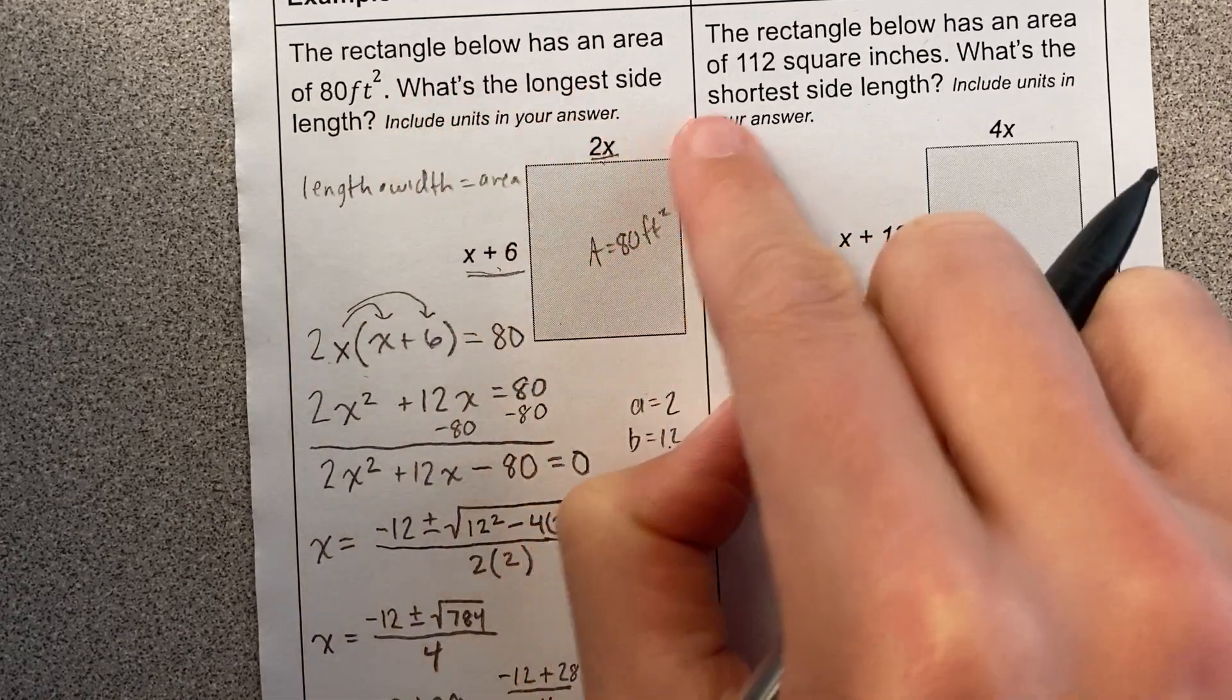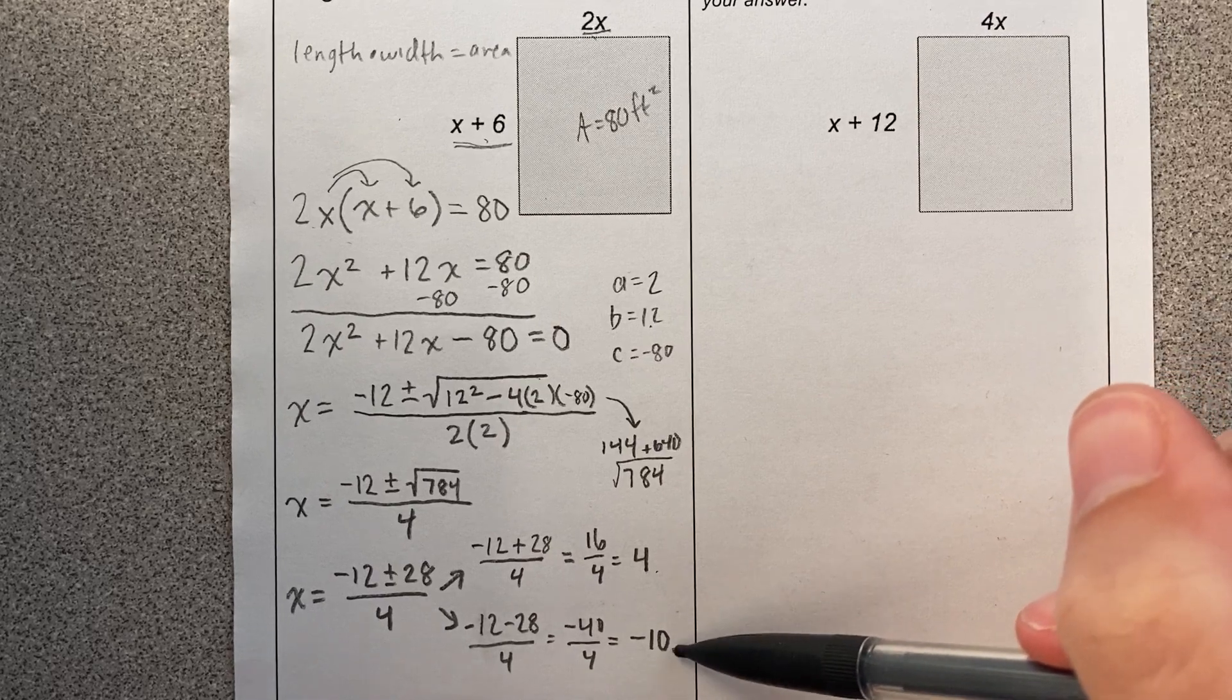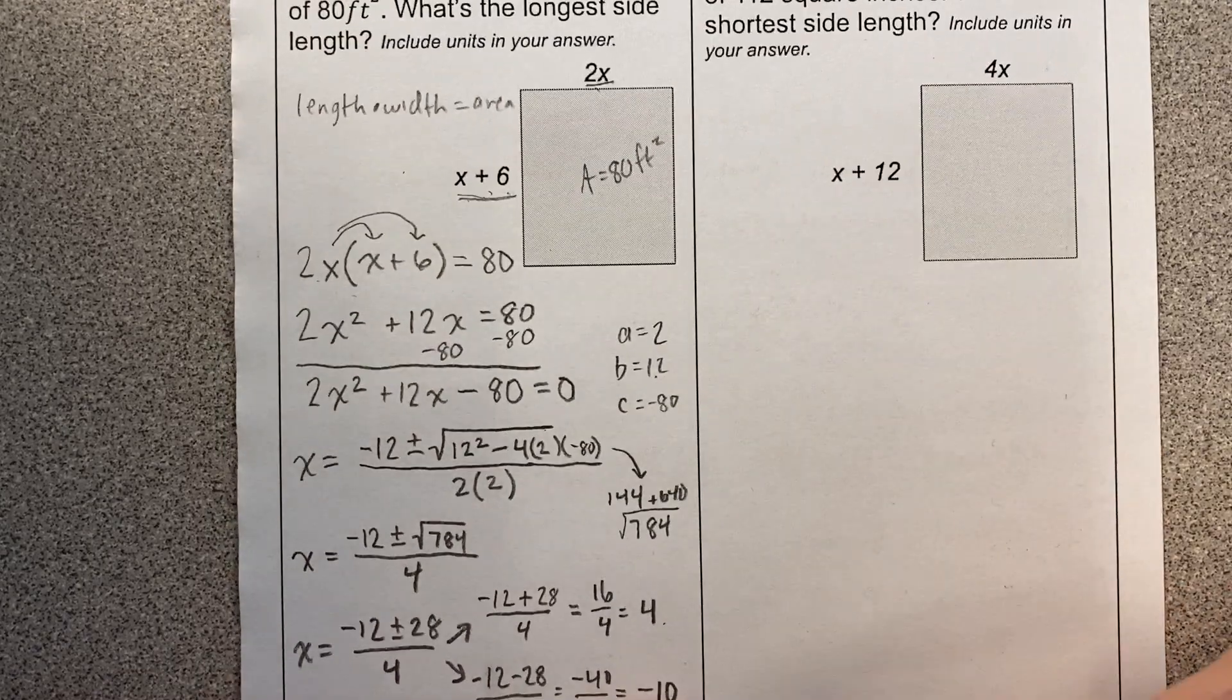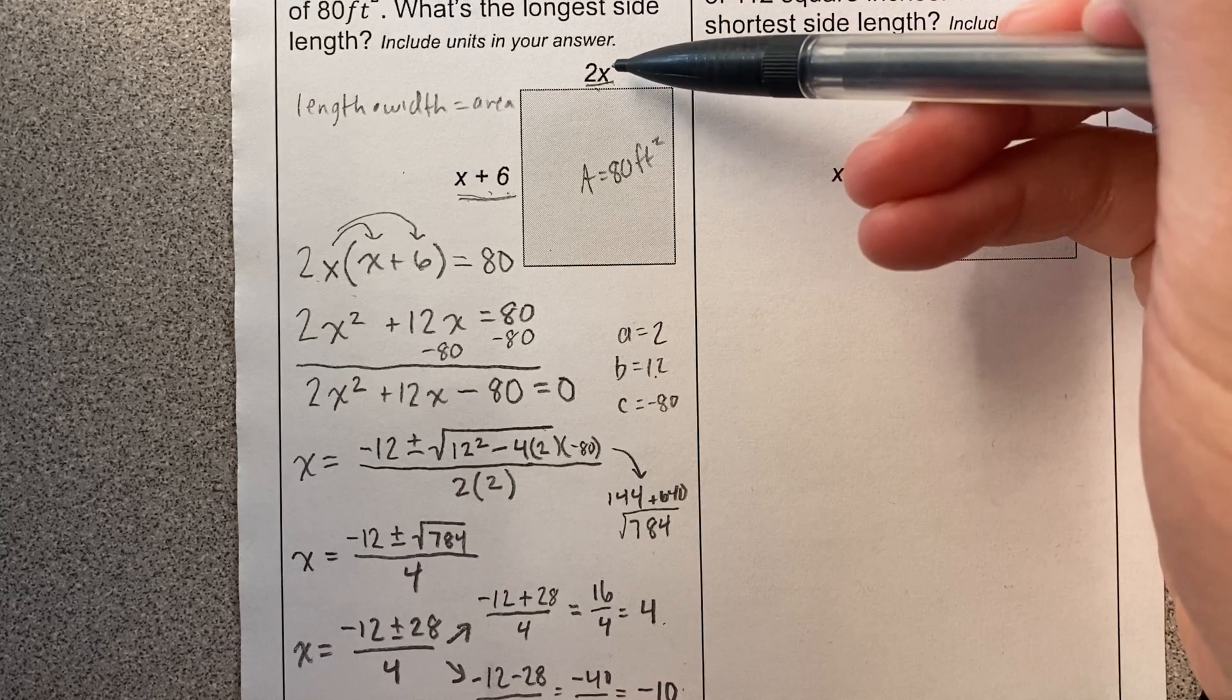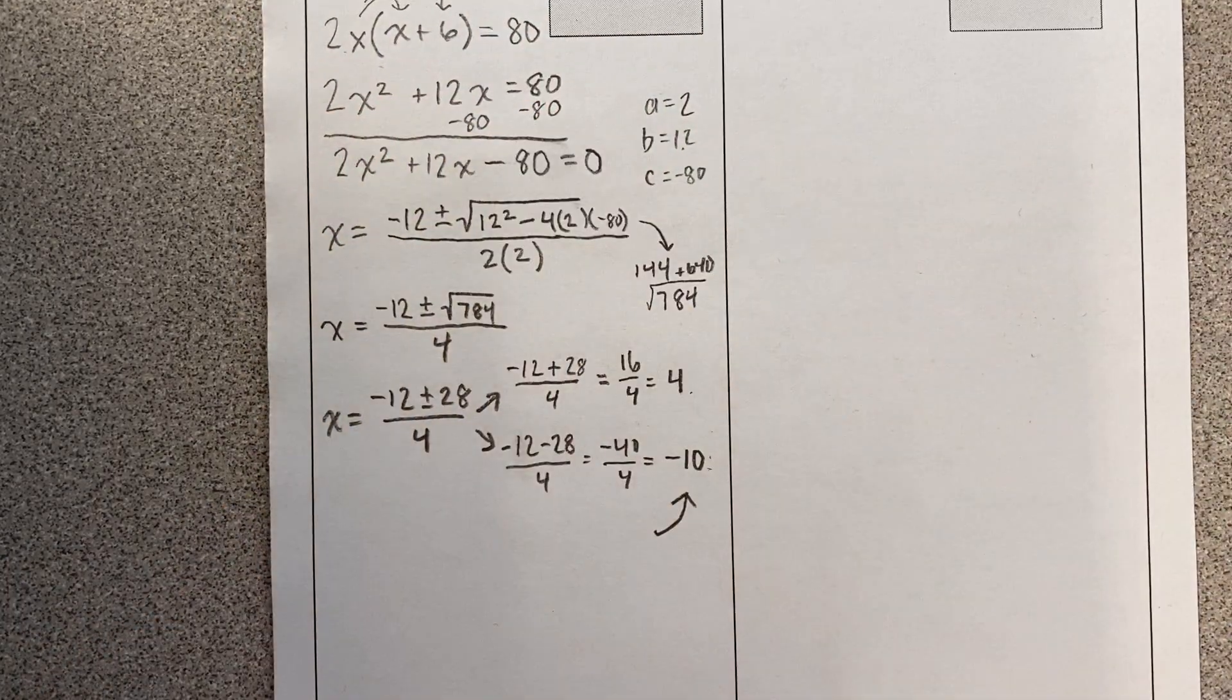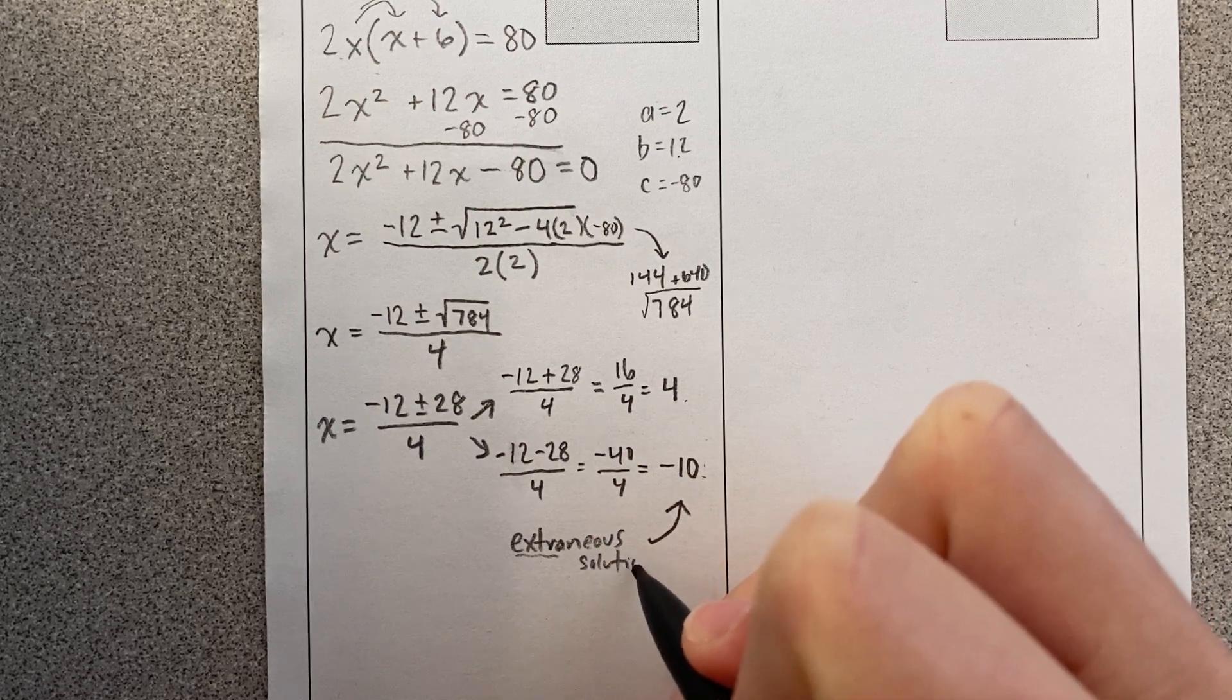Now, but let's look what it's asking. It's asking, what's the longest side length? And here's what's crazy about geometry, right? Because algebra junk, my x values are either 4 or negative 10. But geometry junk, ooh, my x value cannot be negative 10. Look, negative 10 plus 6, that's negative 4. Can this length be negative 4? No, we can't have a negative length. Look, 2 times negative 10? That's negative 20. Can I have a negative length? Nope, I cannot. So this is what's called an extraneous solution.